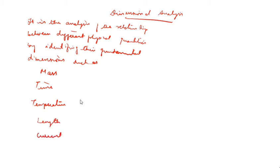Mass is kilogram, symbol M. Time is T or second. Temperature is Kelvin, symbol theta. Length is meter, symbol L. Current is Ampere, symbol A or I. These are the physical quantity symbols.